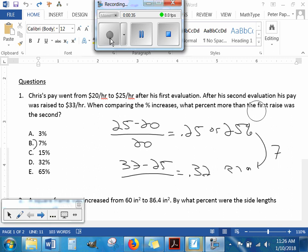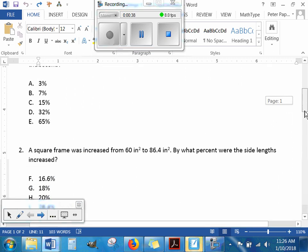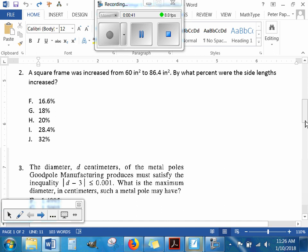Please select your answer for number two. We know the area change, but the question is what percent the side lengths increased. Since these are squares, we have to take the square root. The square root of 60 is about 7.75, and the square root of 86.4 is 9.30. To find the percent growth of the side lengths, we calculate 9.3 minus 7.75 divided by 7.75, which gives us answer H, a 20% growth.